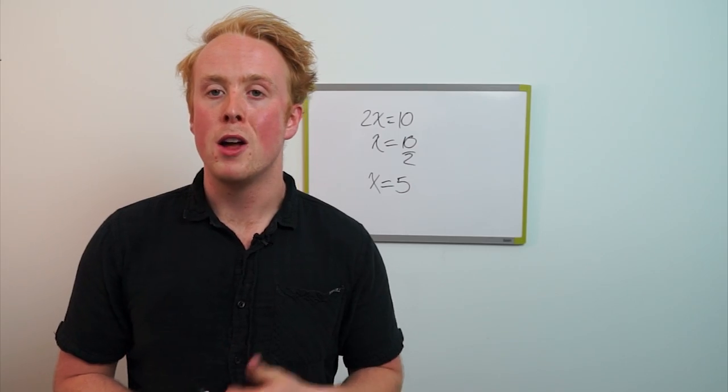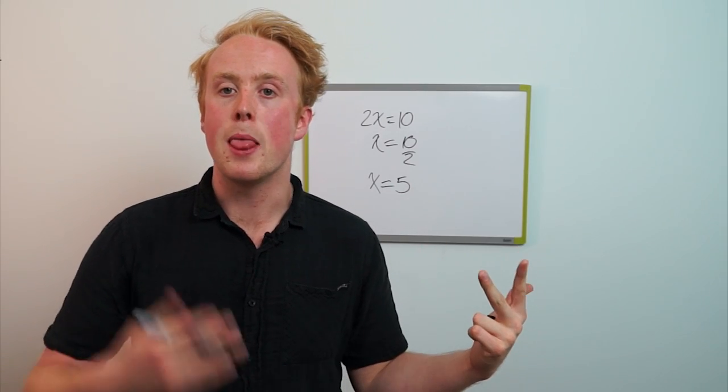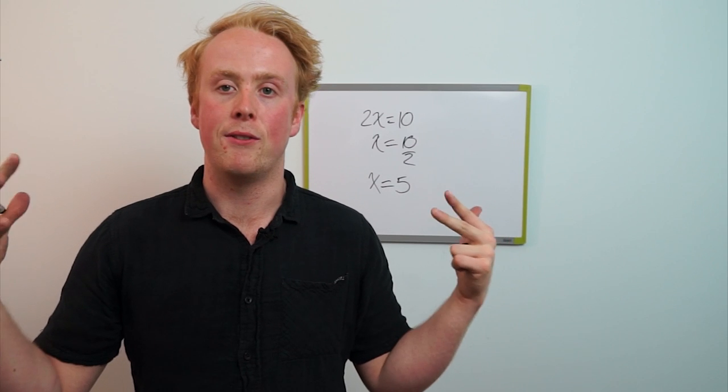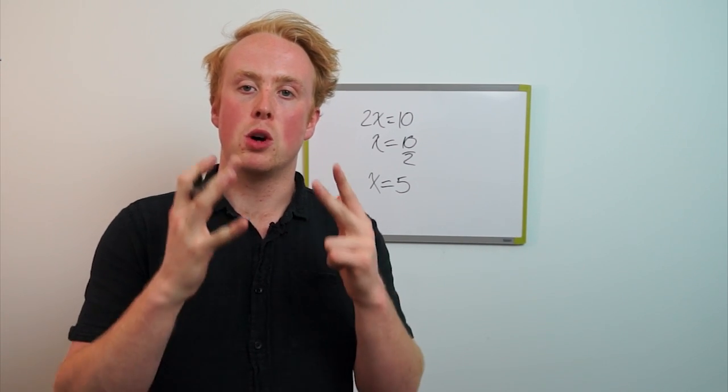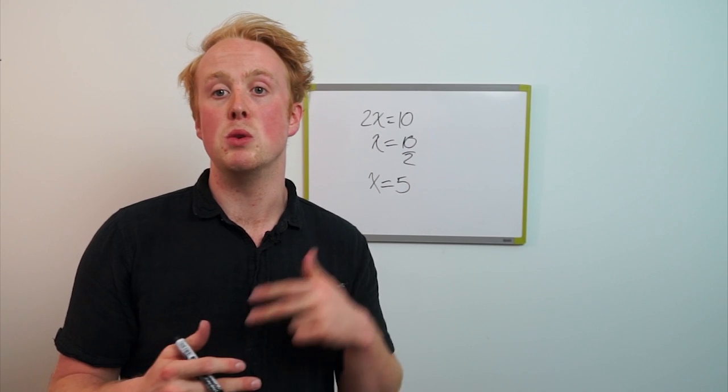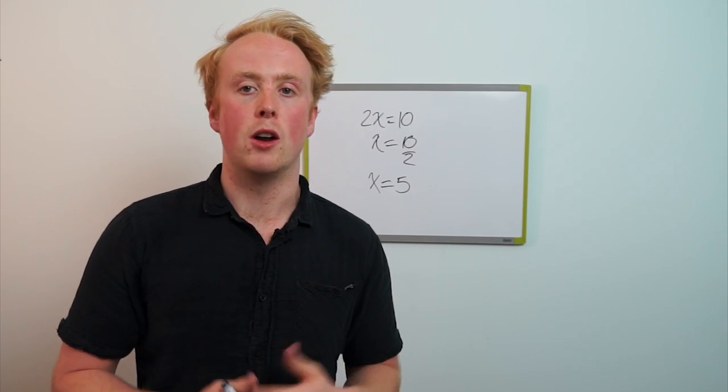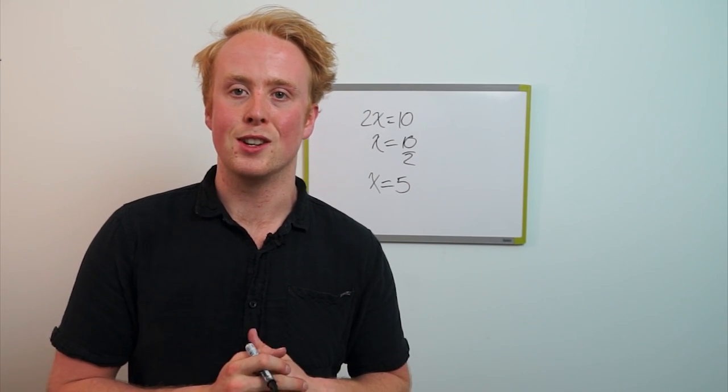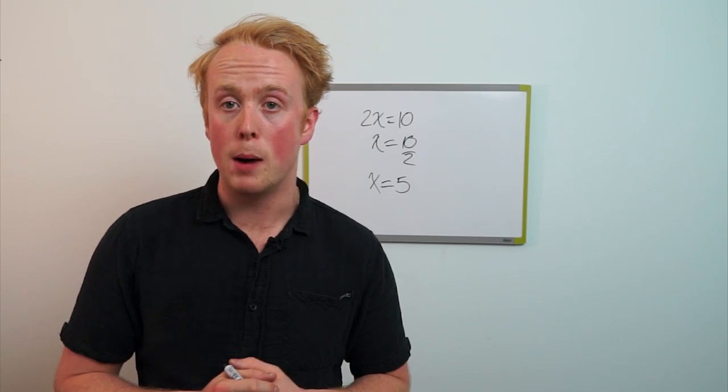The ball costs five cents and the bat costs one dollar and five cents, both summing total one dollar and ten cents, satisfying our property that the bat had to be one dollar more than the ball. And all is well in the mathematical universe. Now onto the knights and knaves problem.